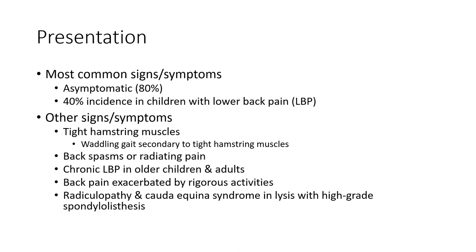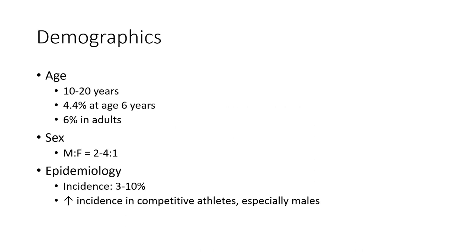Radiculopathy and cauda equina syndrome occur in lysis with high-grade spondylolisthesis. Demographically, the age range is 10 to 20 years, with 4.4% incidence at age 6 and 6% in adults. The condition is predominant in males. Epidemiological incidence is 3 to 10%, with increased incidence in competitive athletes, especially males.